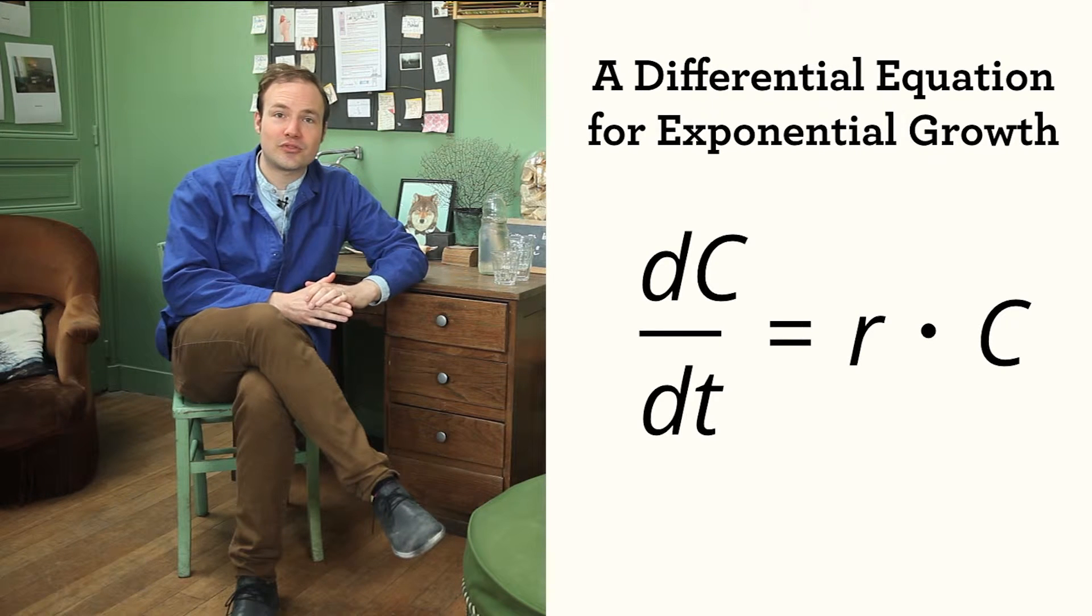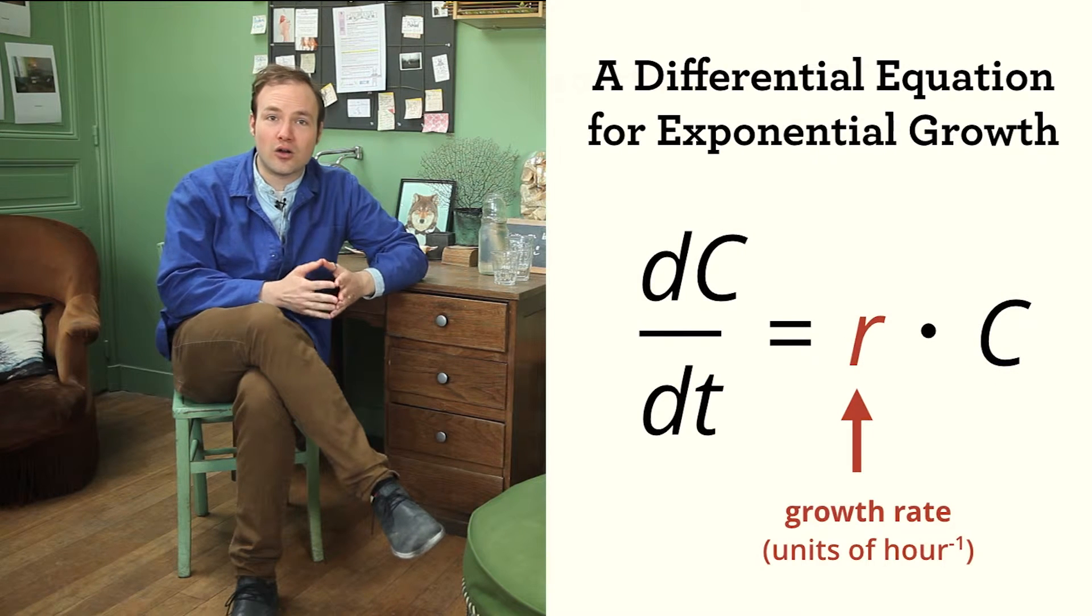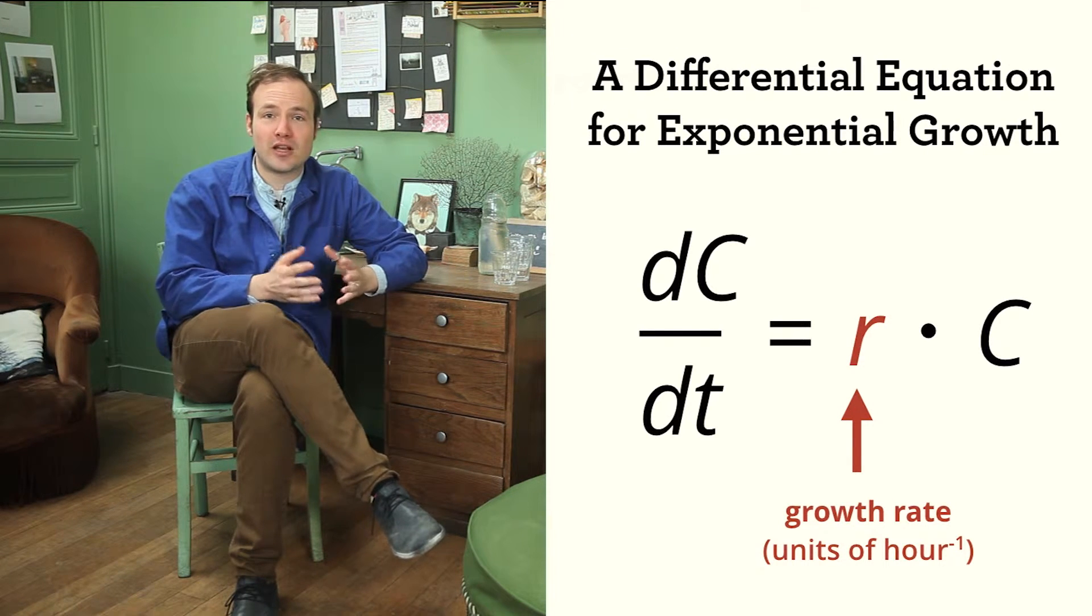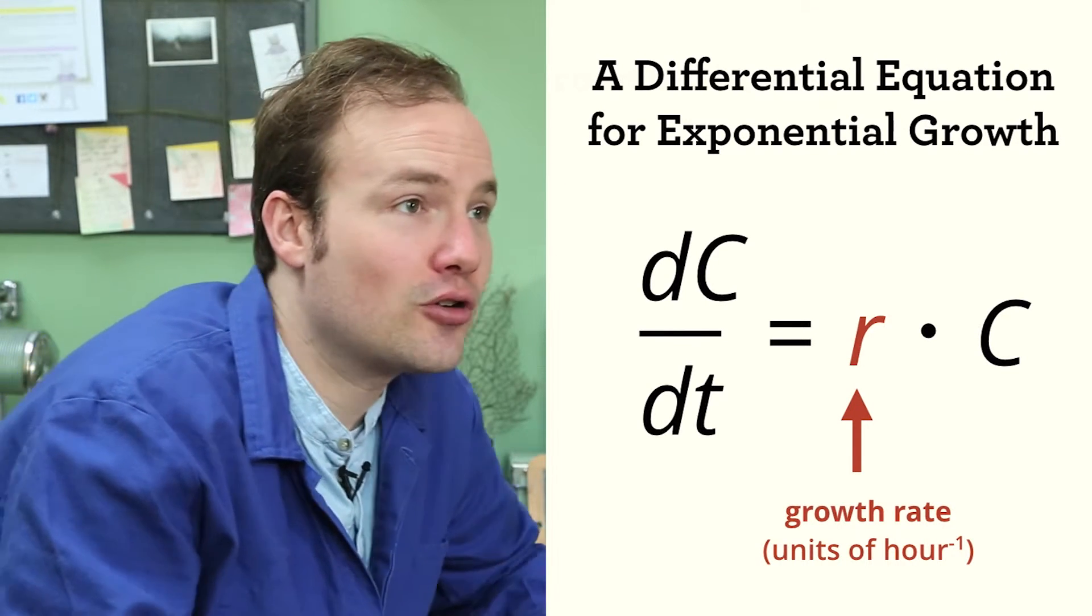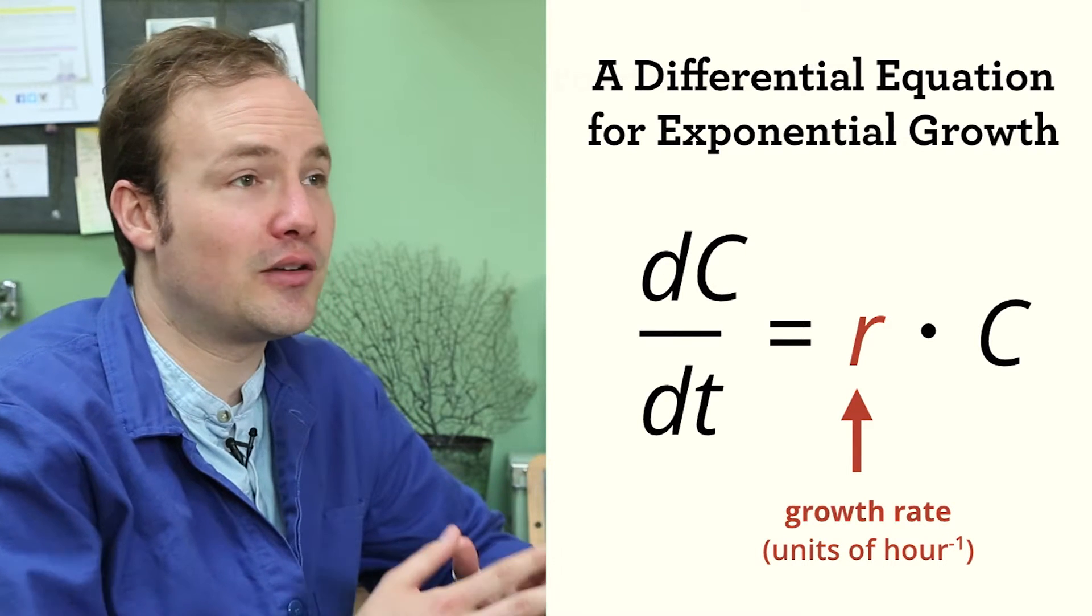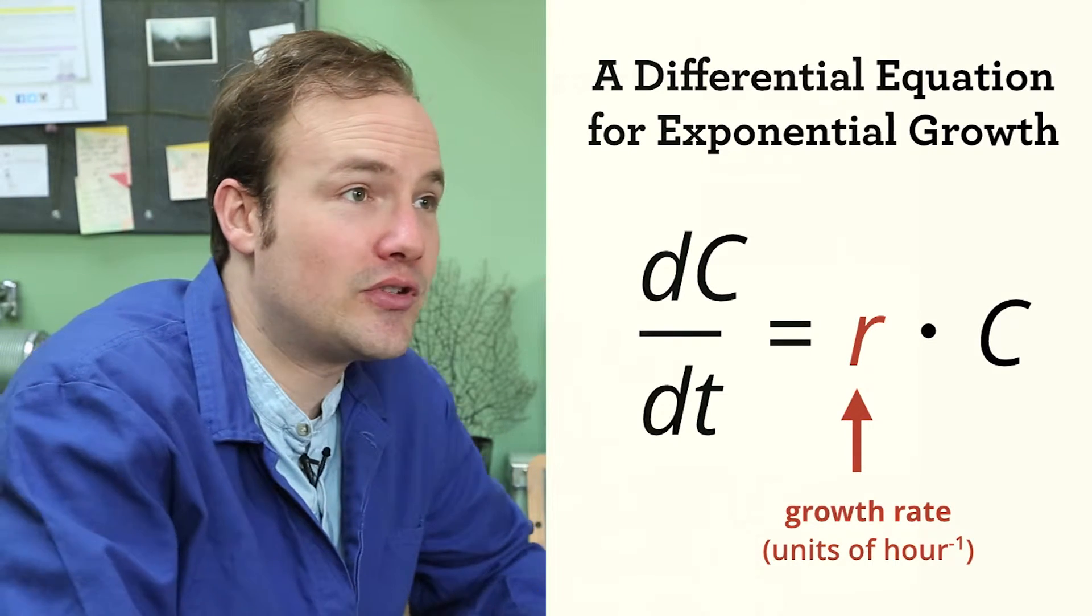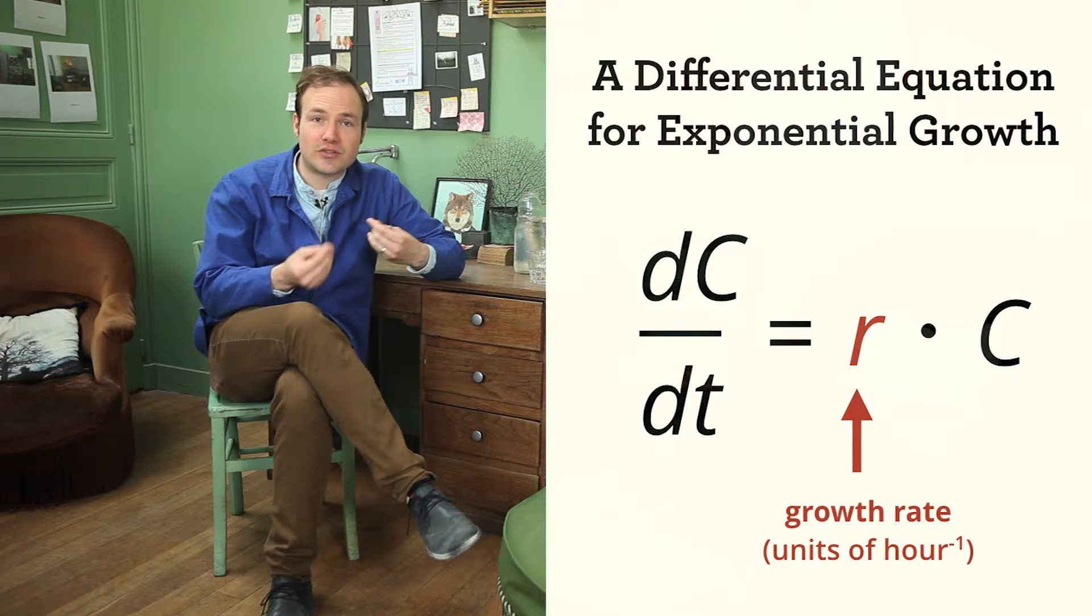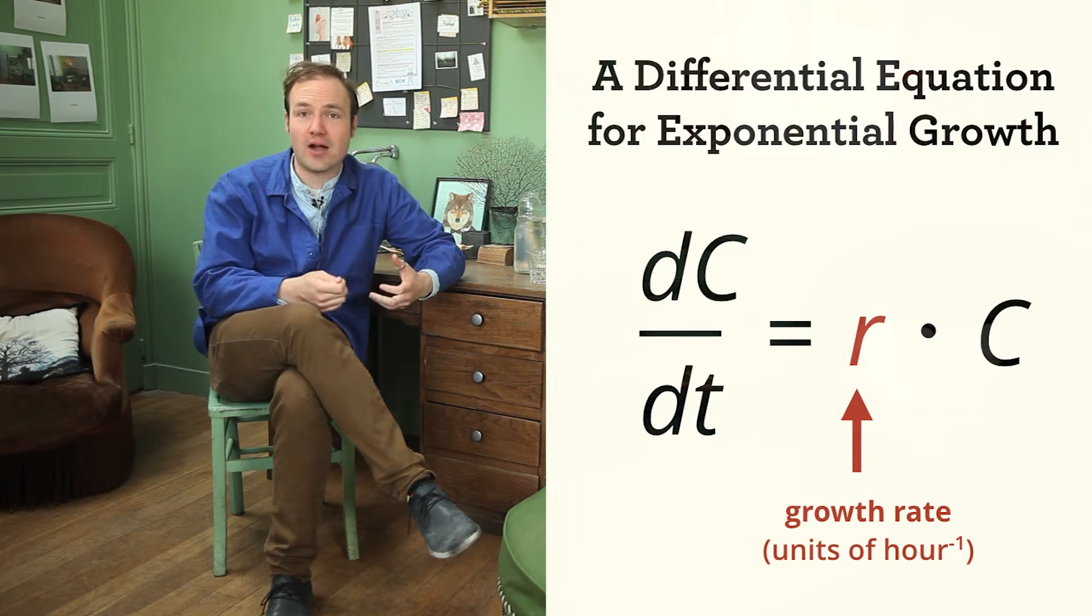This equation has three variables. C represents the number of cells. T represents time. And R represents the specific growth rate of our cells. In the example I mentioned earlier, this division rate is once per hour. Because this equation describes a physical process, each term has physical units. The derivative on the left tells us the number of new cells being created per hour. It has units of cells per hour. The term C on the right represents the total number of cells. It is expressed simply as a number. Finally, R represents the growth rate of the cells, one division per hour. It has units of per hour, or hours to the minus one.